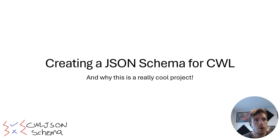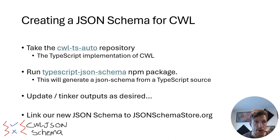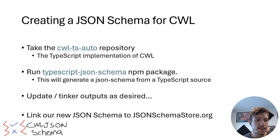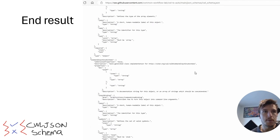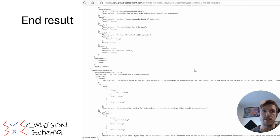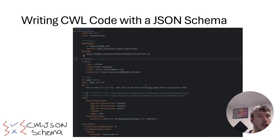So that was quite a build-up. Let's get into it. Combining the thankless efforts of others to build on the CWLTS auto repository and an open NPM package, we can generate a pretty easy draft of what the JSON Schema should look like, and then we can use some Python code to tinker this to our heart's desires. We can then link that new JSON Schema to jsonschemastore.org. This is the end result — just imagine this keeps going for like another 7,000 lines. Things probably look a little bit familiar here.